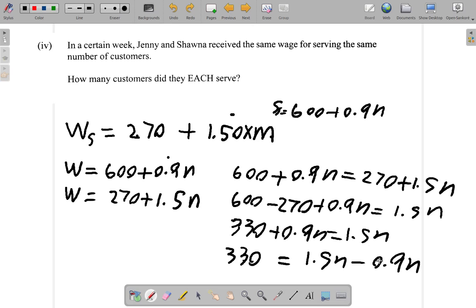So what I have is 1.5N minus 0.9N. What's that? That's 1.5 minus 0.9, which would leave 0.6, so that's 0.6N.